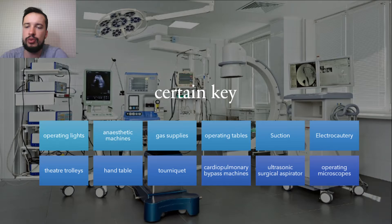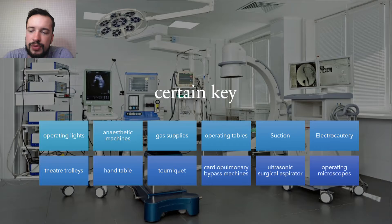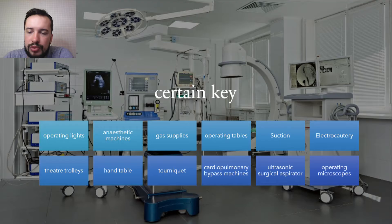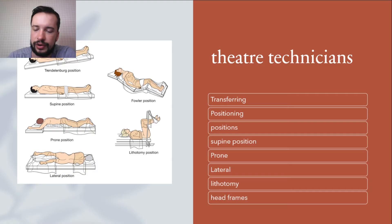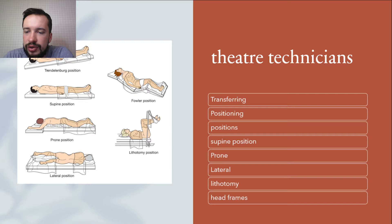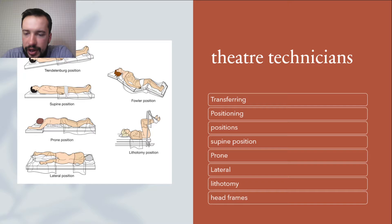There are certain key items common to all suites, such as operating lights, anesthetic machines, gas supplies, operating tables, suction, electrocautery and CO2 insufflators. Specific items are required for specialty surgery, including hand tables for hand surgery, tourniquets for orthopedic limb operations, cardiopulmonary bypass machines for cardiac surgery, ultrasonic surgical aspirators for hepatic and neurosurgical resections, and operating microscopes for the most delicate work. The value of experienced, well-trained theater technicians cannot be underestimated in their contribution to patient care from the perspective of equipment provision.